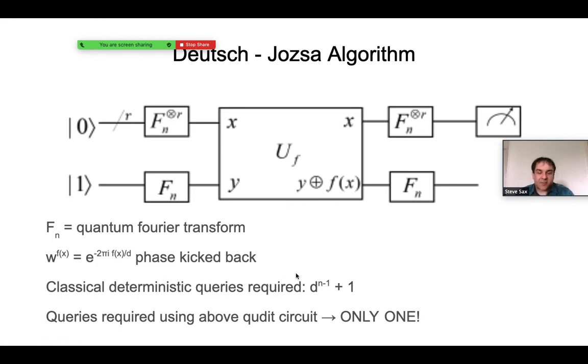Just to give an example of the power of a Qudit system from such a fundamental circuit like this, the number of classical deterministic queries that would be required to determine whether the function is constant or balanced is d to the n minus 1 plus 1. But the number of queries required using this circuit is still just one.